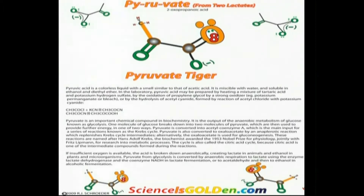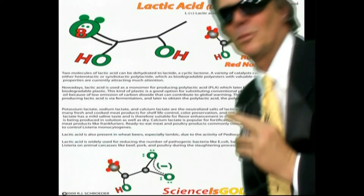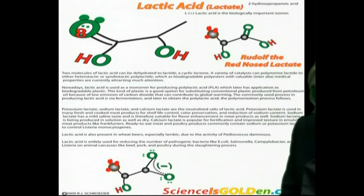So what I like to do is take all those drawings — enzymes like Rubisco when you're building sugars — and to follow what is actually happening in each step, make a little animal out of it. So here's the pyruvate tiger. See the lactic acid tiger? What do we call them there — Rudolph, the red-nosed lactate.